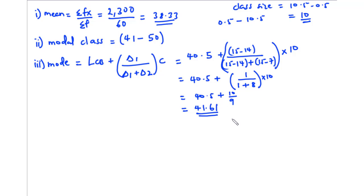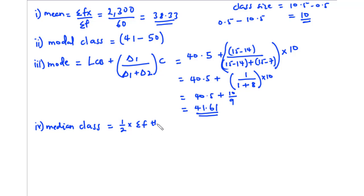After finding the mode, we can find the median class. The median is the middle number, so to find the median class we use the formula: 1/2 times the summation of f, describing the position of the value. We have 1/2 times 60, which is the 30th value — so we're looking for the value in the 30th position.